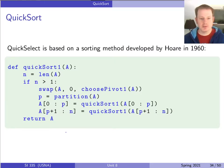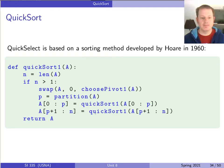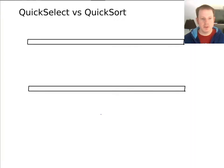So here's quick sort. You'll notice that it's basically the same thing as quick select — we pick a pivot element, then we partition based on that pivot element, and then we have some recursion. The difference is that we have two recursive calls now instead of just one recursive call.